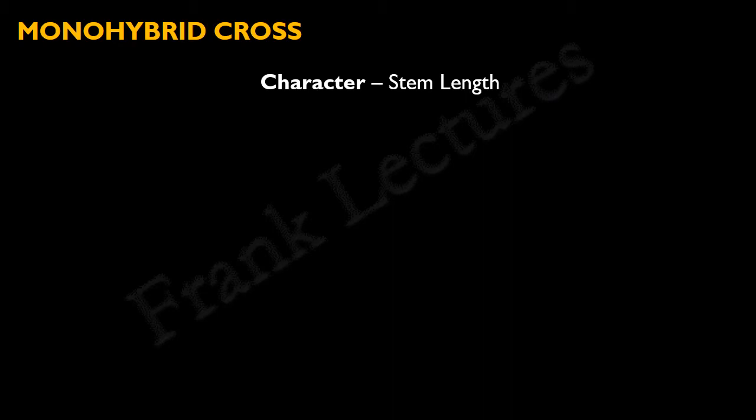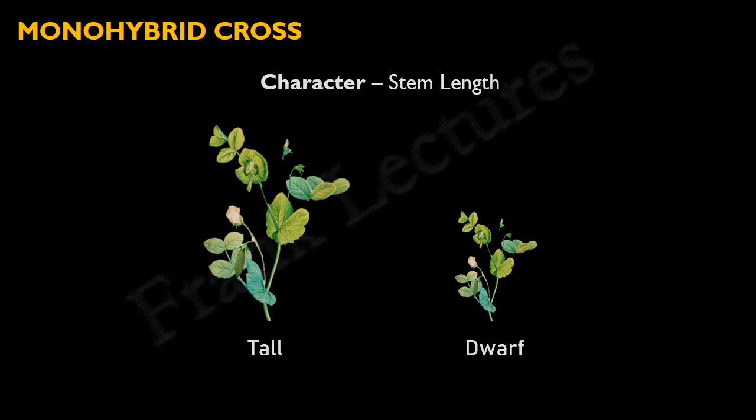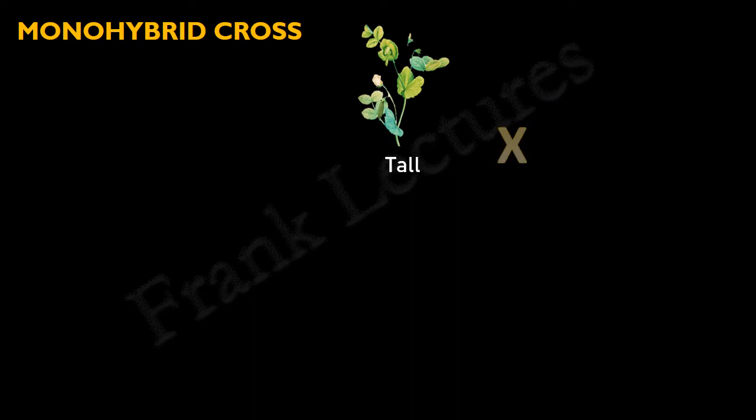For our illustration, we will take the character of stem length or plant height of the garden pea plant. The two traits for this character are tall and dwarf. Mendel took pollen from the tall plant and manually transferred it to the stigma of the flower on a dwarf plant. This means the tall plant is the male and the dwarf plant is female.